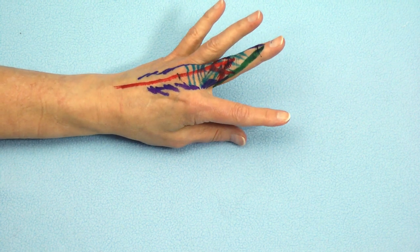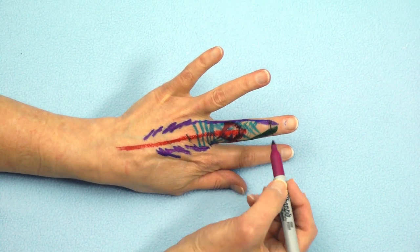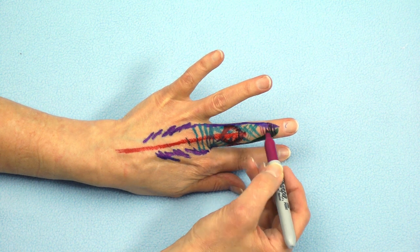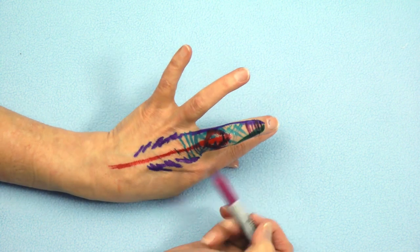Now we've drawn the entire dorsal apparatus, but what we have not included are the retinacular structures. Between the lateral bands distally are fibers that are called the triangular ligament. And during finger flexion, that triangular ligament keeps the lateral bands together.